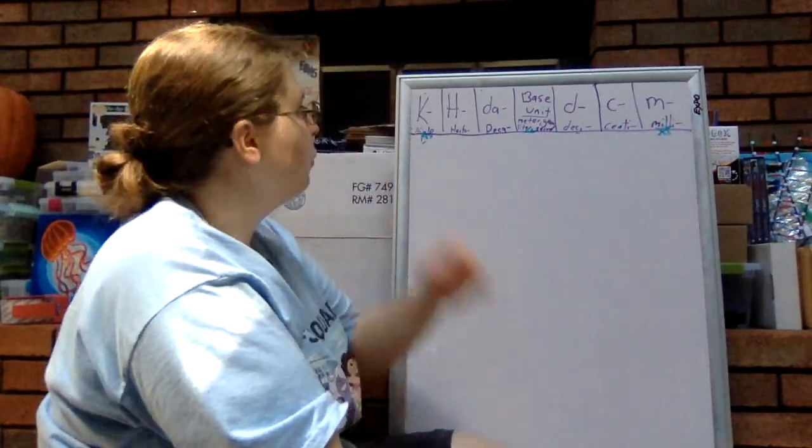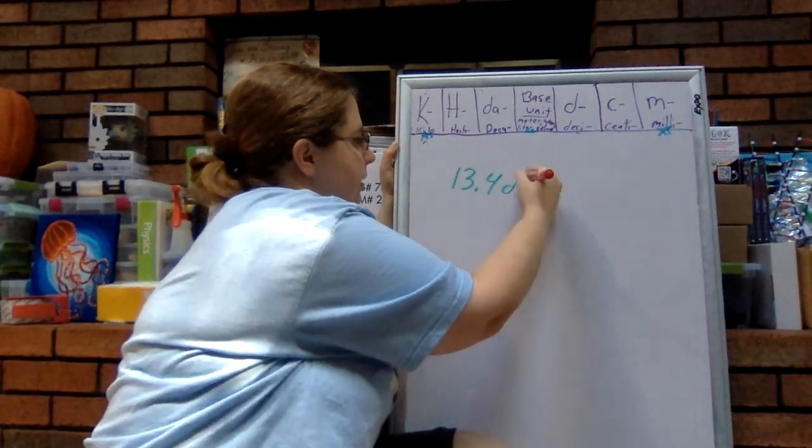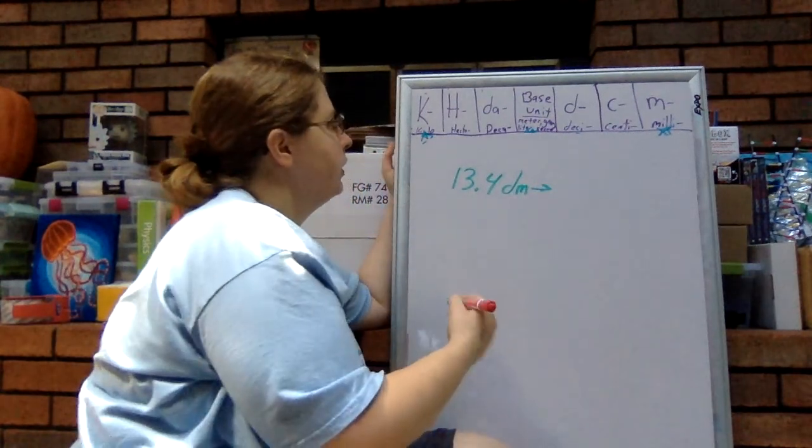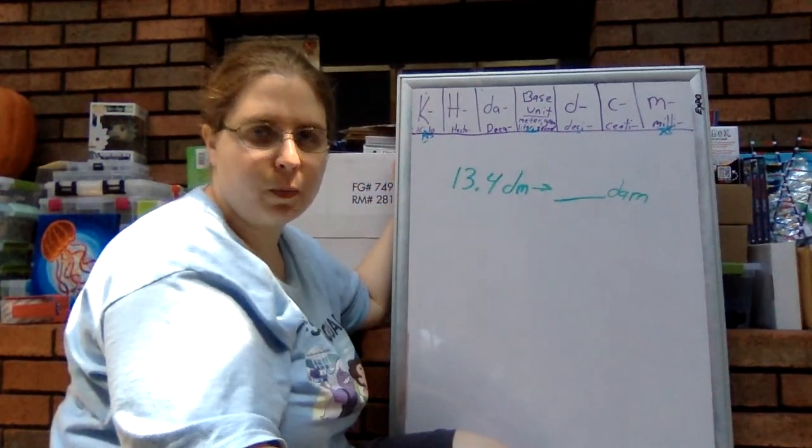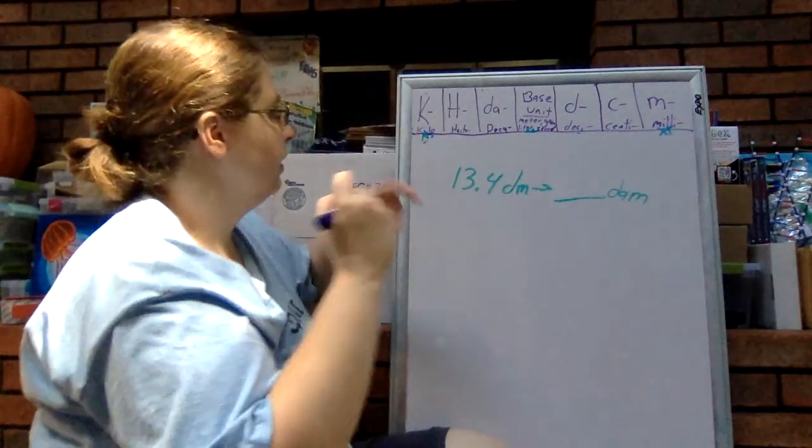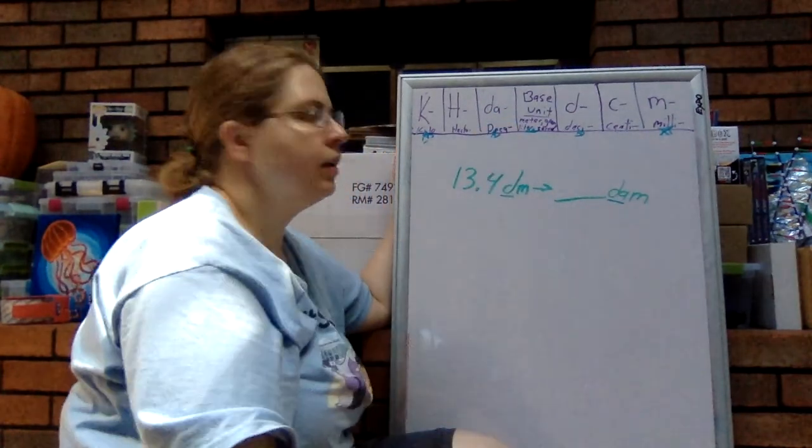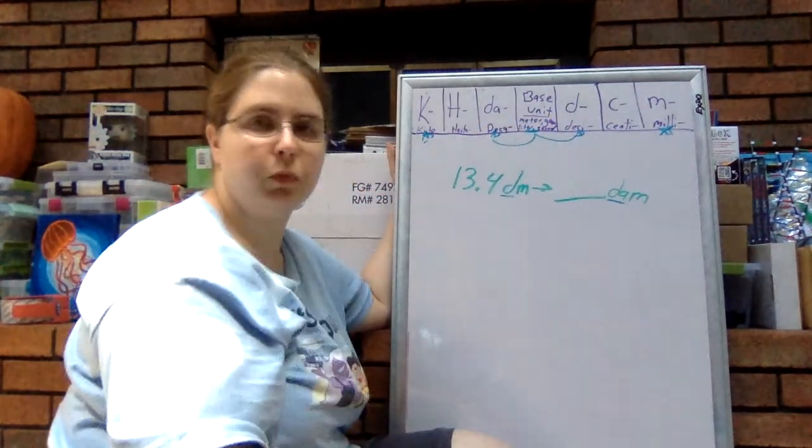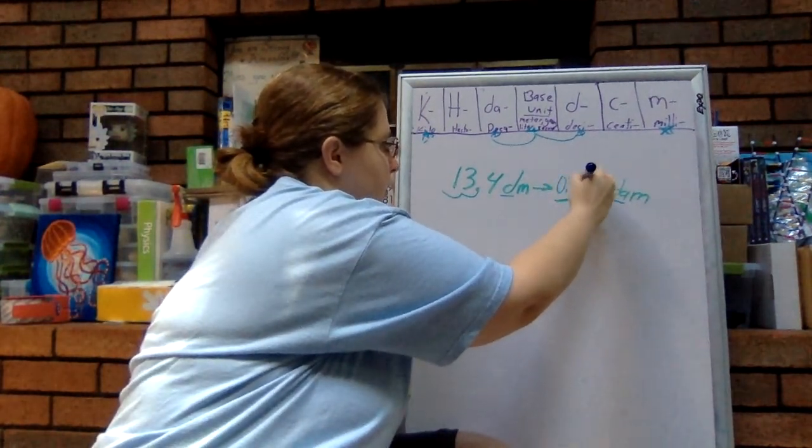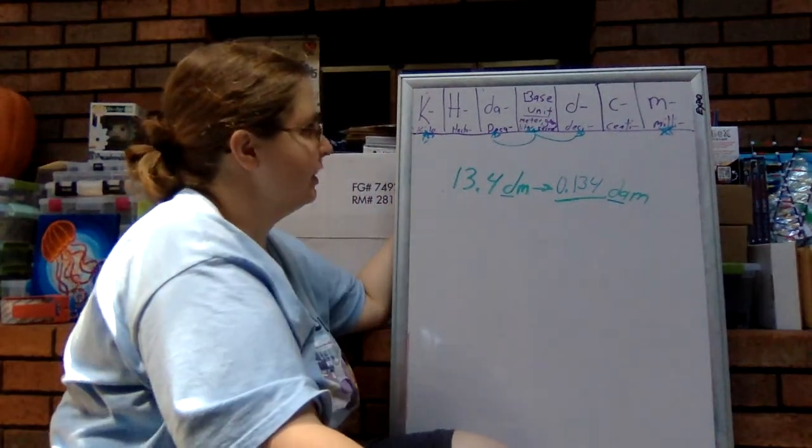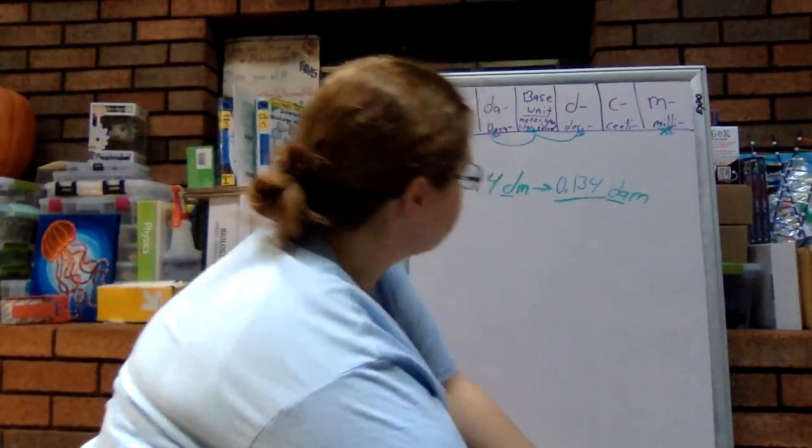Alright, let's do a couple more. What if I want to go from 13.4 decimeters to decameters? Alright, let's figure this out. We're starting with the prefix D, which is deci. And we're going to end up at deca. So what we have to do to get from here to here - one, two. We're going to move two places to the left. One, two. So 13.4 decimeters is equal to 0.134 decameters.